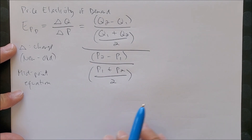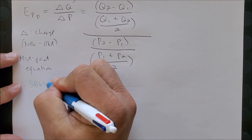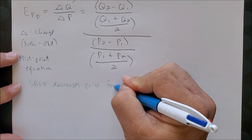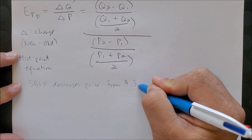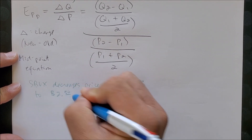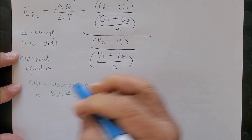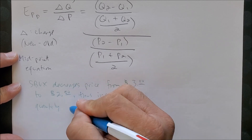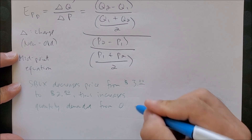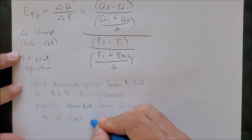Now we have the midpoint equation. For example, let's look at Starbucks. Starbucks decreases price from $3 to $2.50, which increases the quantity demanded from 0 cups to 2 cups of coffee.